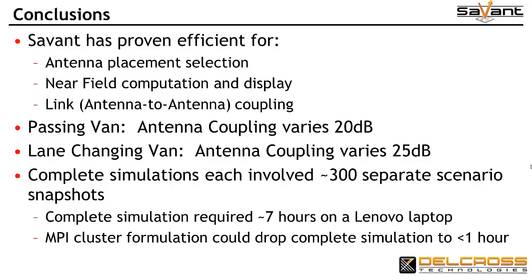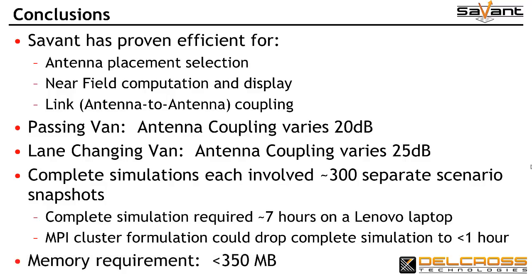Simulations for each animation required about 7 hours on a quad-core laptop with a standard NVIDIA graphics adapter and GPU. Using higher-end hardware with an MPI formulation for clusters could drop the complete simulation cycle to less than an hour. The largest simulation considered for all the results shown in this video series is under 350 megabytes — you don't need exotic or expensive hardware for productive use of Savant.